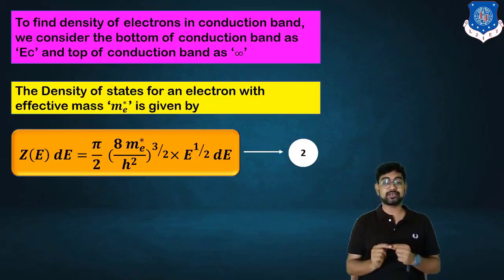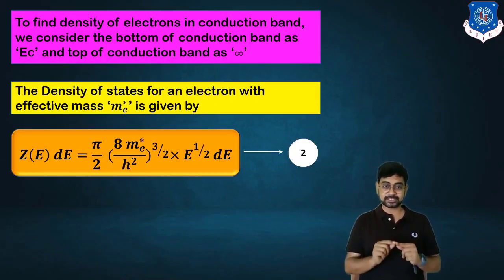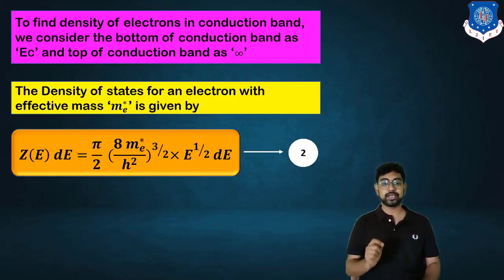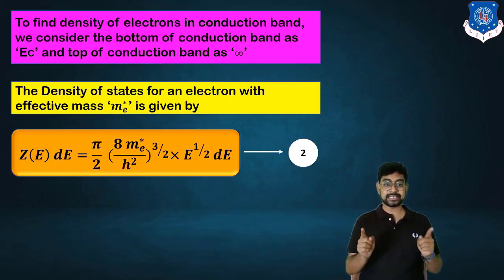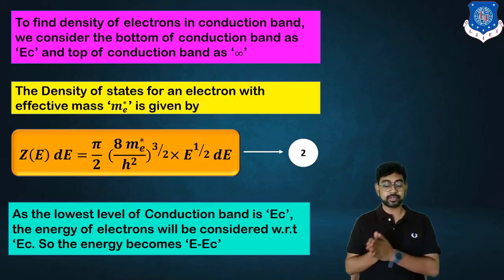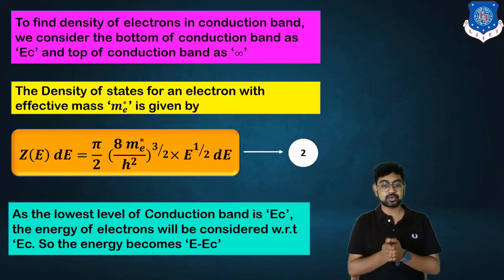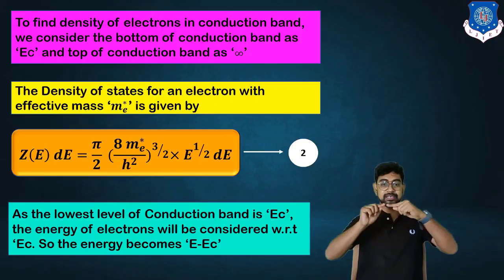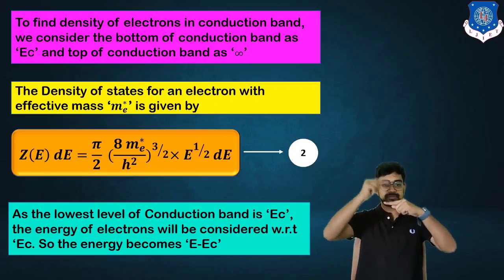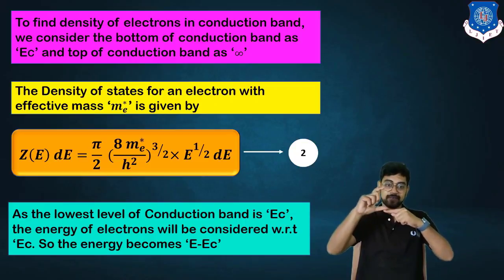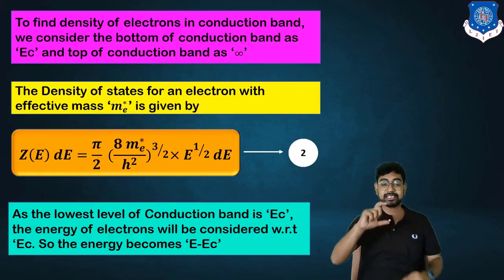The density of states with the effective mass m*_e is written as Z(E) = (π/2)·(8m*_e/h²)^(3/2)·(E-E_C)^(1/2). We use m*_e rather than m_e because the electron is no longer in vacuum — this is the practical world. The lowest level of the conduction band is E_C, and the energy of the electron is considered with respect to E_C, so the energy becomes E minus E_C. If the energy level is 5 and E_C is 0, then E - E_C equals 5.